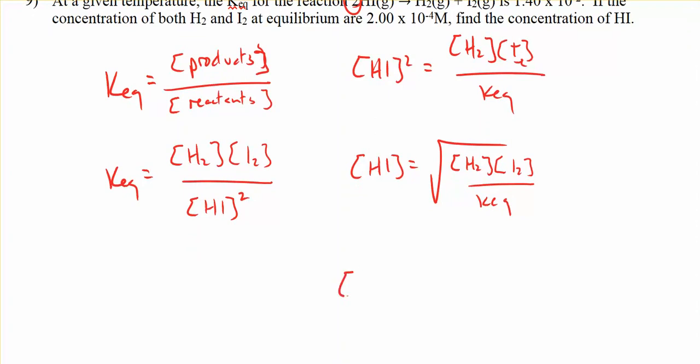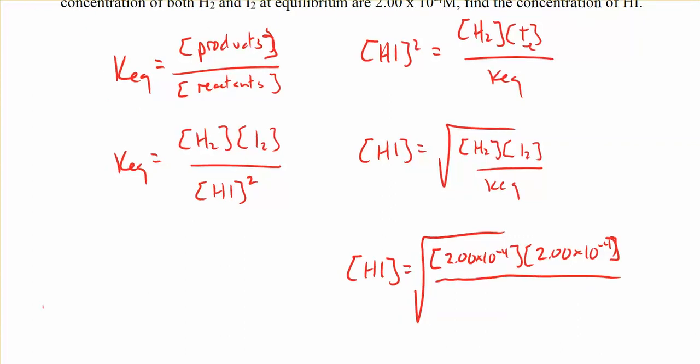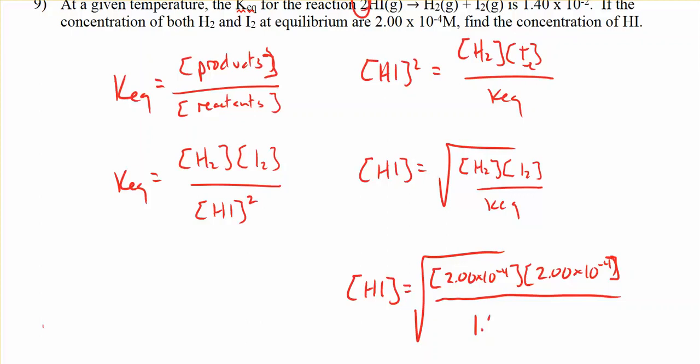Plugging in some values here, I get the concentration of HI equals the square root of 2 times 10 to the minus 4 times 2 times 10 to the minus 4 divided by my Keq, which is 1.4 times 10 to the minus 2. Keq is not in brackets because it's not a concentration.